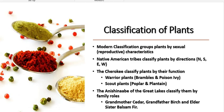There are different ways to classify groups of plants. In a textbook on botany or biology, you will typically see the modern classification of plant groups based on sexual reproductive characteristics. In some cultures, such as Native American tribes, plants are classified by directions such as north, south, east, and west.